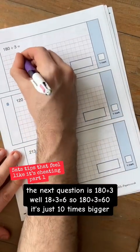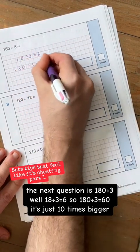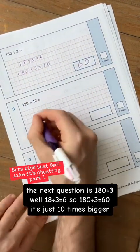The next question is 180 divided by 3. Well, 18 divided by 3 is 6, so 180 divided by 3 is 60. It's just 10 times bigger.